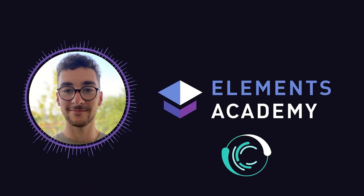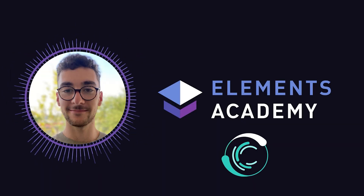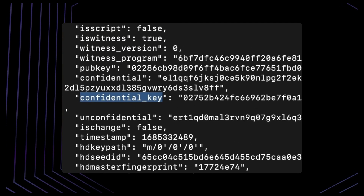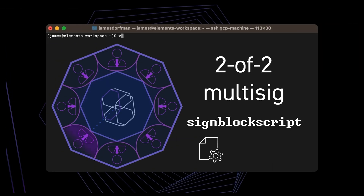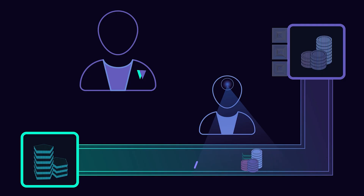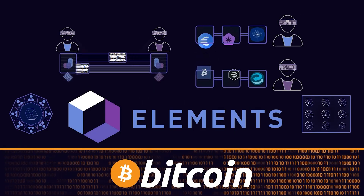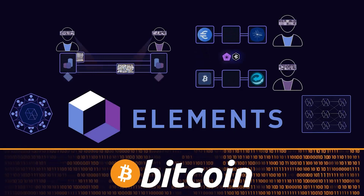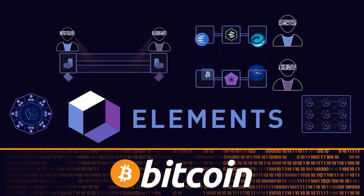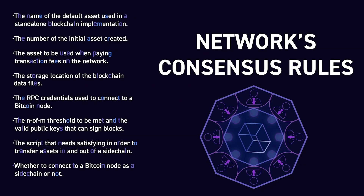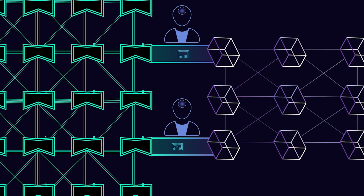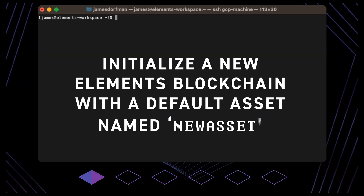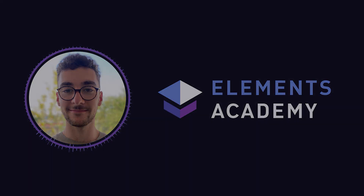By the end of this course, you will have a good understanding of the main features of Elements. You'll also be able to run an Elements network on your own. Elements adds all these features on top of the Bitcoin Core codebase, extending the ability of the mainchain protocol and enabling new business use cases when deployed as a sidechain or as a standalone blockchain solution. Let's get started.